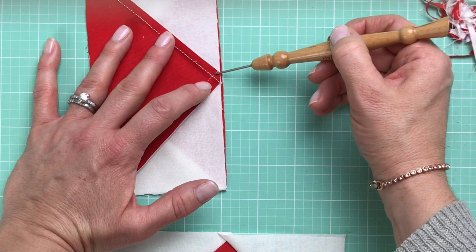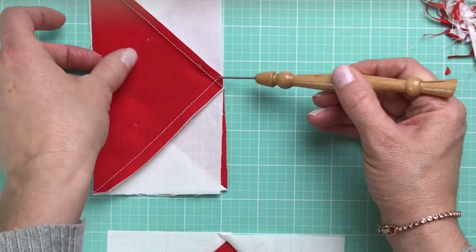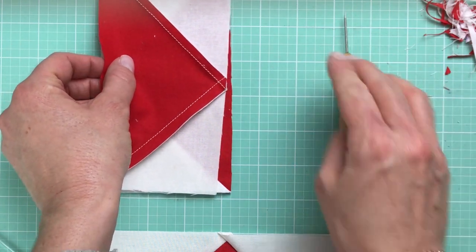You don't want to cross over this intersection. If you do, you're going to cut off your point. If you stay just a thread on this side, you're going to have perfect points every time.